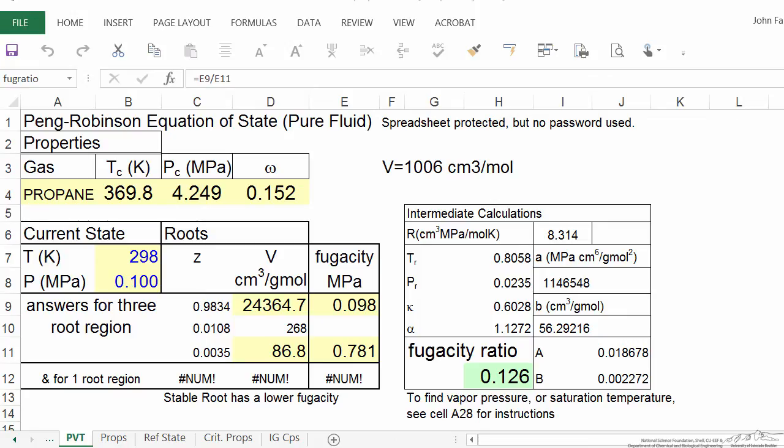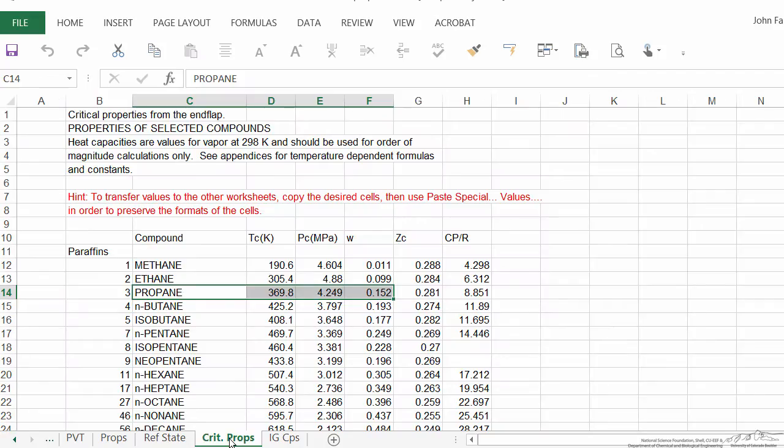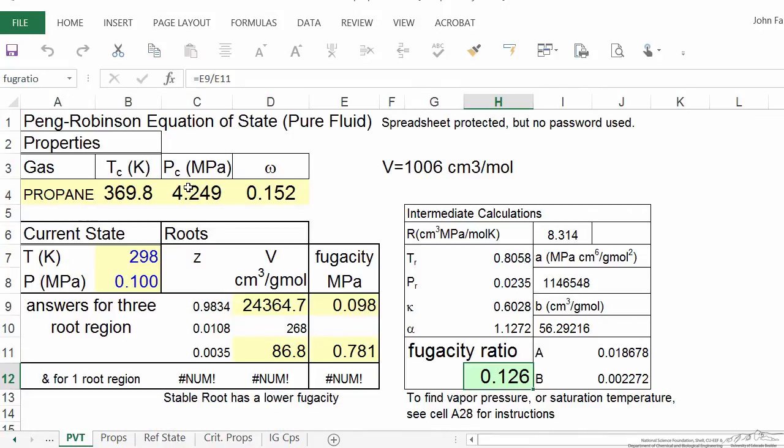Here we have the Peng-Robinson equation of state spreadsheet. I've made some of the fonts bigger and highlighted the parts we're most interested in. I've put in the critical temperature, pressure, and acentric factor by going to the critical properties and copying them here.